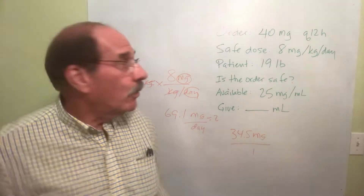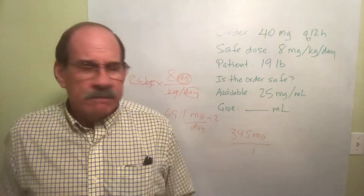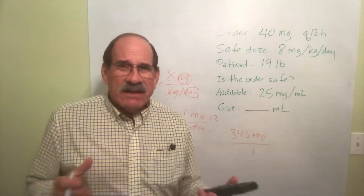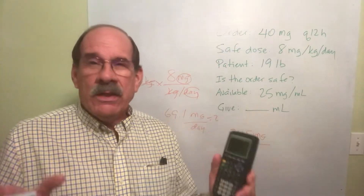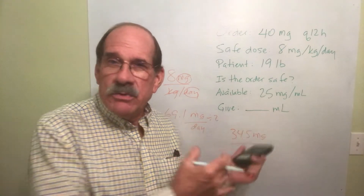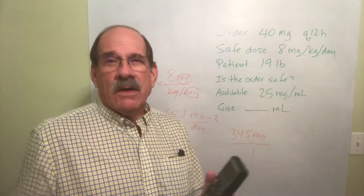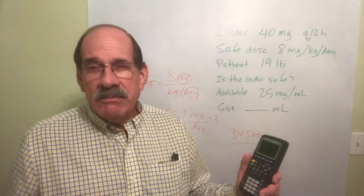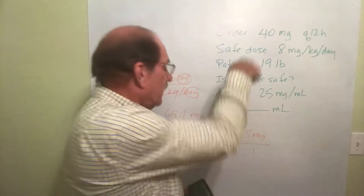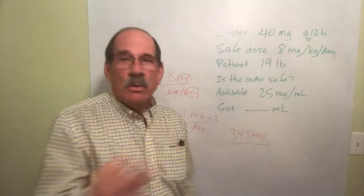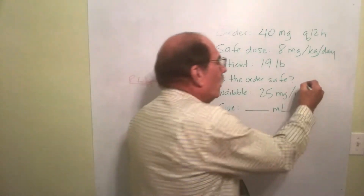What did the prescriber order? 40 milligrams. You may think that's fairly close, but in the real world you need to know how close is still okay, or how far away is no longer okay. If the ordered amount is not within the safe dosage, you don't give it. So is the order safe? No.